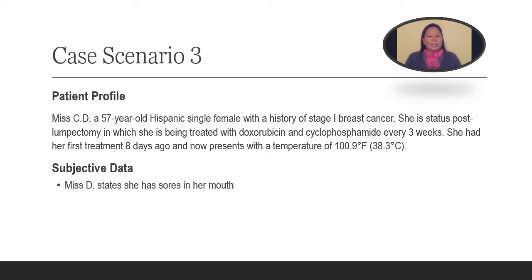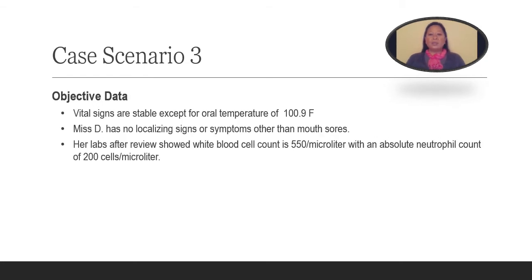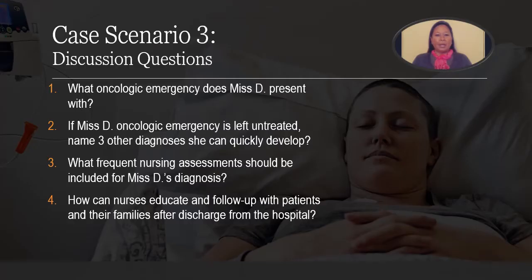When questioning Ms. D, she states that she has sores in her mouth. Upon physical examination, her vital signs are stable except for her oral temperature of 100.9 degrees Fahrenheit. Ms. D has no localizing signs or symptoms other than the sores in her mouth. Her labs showed that her white blood cell count is 550 with an absolute neutrophil count of 200. Let's take 10 to 15 minutes to do the discussion questions on case scenario number three. Please press pause.